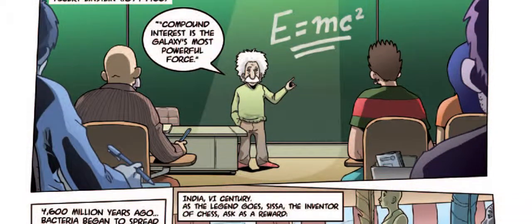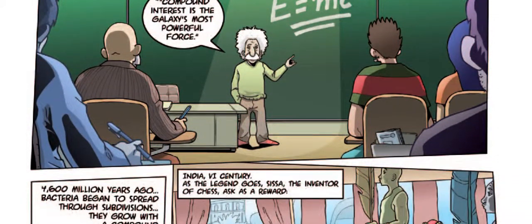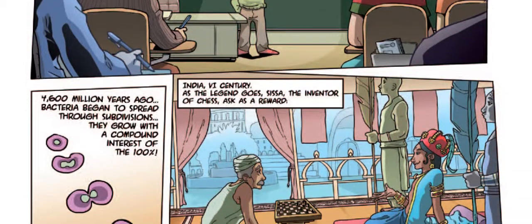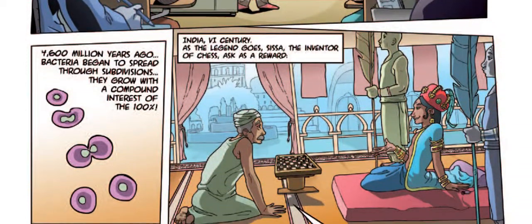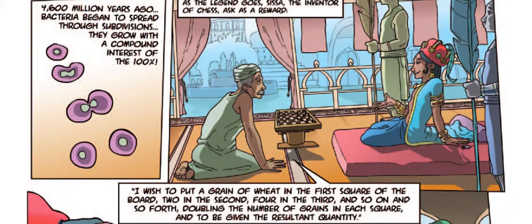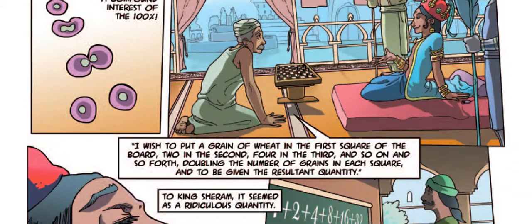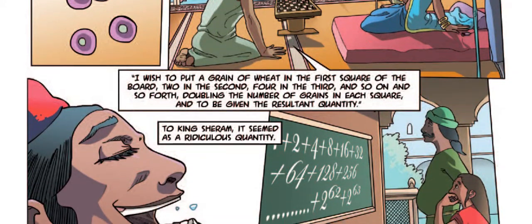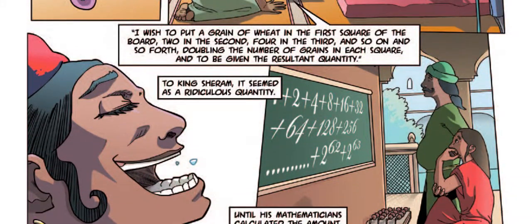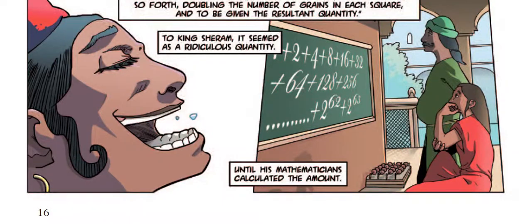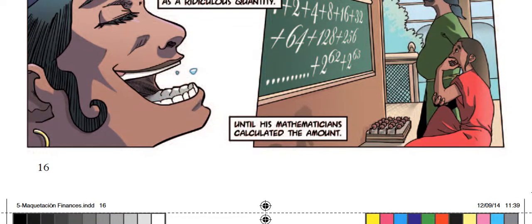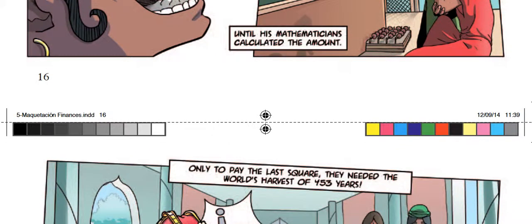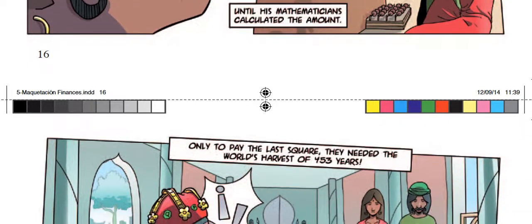This is the fourth chapter of Finances in the Half Hour. The interest rate is an essential concept of finances. The compound interest rate is based on the supposition that generated interest continues generating interest, hence exponentially increasing the amount to collect or pay. Their growth is much higher than what one may think at first. In Albert Einstein's words, it is the most powerful force in the universe, illustrated with the example of the bacteria, the legend of chess, or the purchase of Manhattan's island.